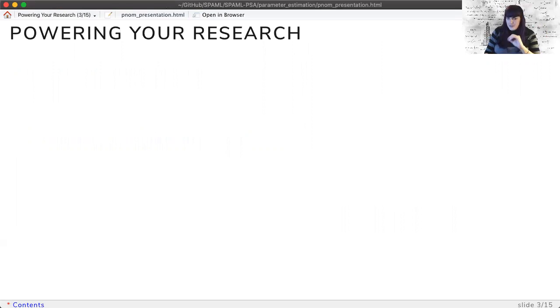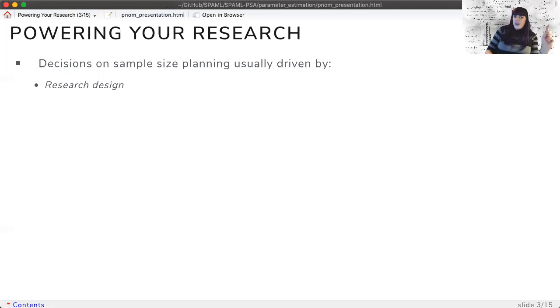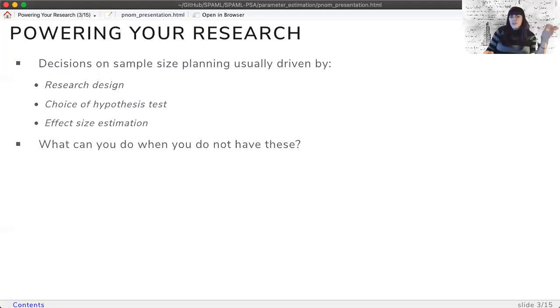While it's very exciting that these data are available, we have to stop and consider the implications of publication of reliable validated data. Normally, when we power our studies, we focus on the desired sample size to achieve a specific power probability. This sample size planning is driven by the research design, the choice of hypothesis test, and the effect size estimation. Stimuli norming has nearly none of these parameters.